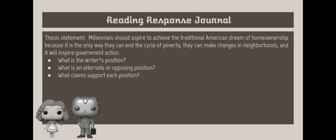Now you're going to read the thesis statement and answer the questions in your reading response journal. The thesis statement is: Millennials should aspire to achieve the traditional American dream of homeownership because it is the only way they can end the cycle of poverty, they can make changes in neighborhoods, and it will inspire government action.